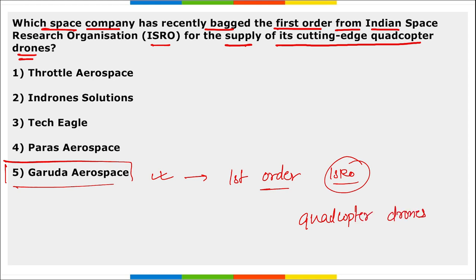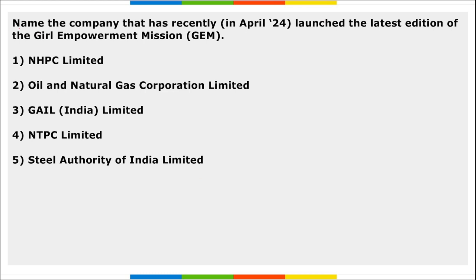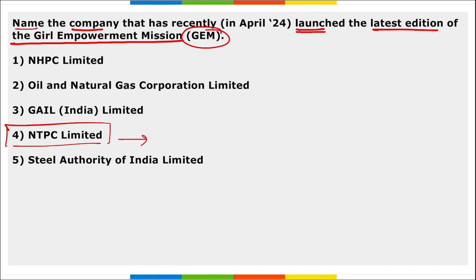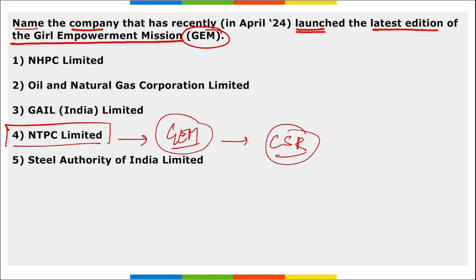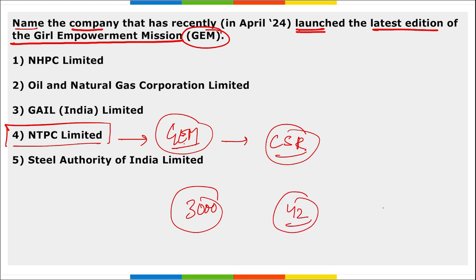These quadcopter drones are equipped with machine learning and artificial intelligence. Next: name the company that has recently launched the latest edition of the Girl Empowerment Mission (GEM). It is NTPC Limited. They have launched the latest edition of GEM, which is a Corporate Social Responsibility initiative of NTPC — National Thermal Power Corporation. This new edition will add around 3,000 underprivileged children at 42 locations of NTPC, and with this mission it is expected that the benefit will expand to a total of 10,000 girls.